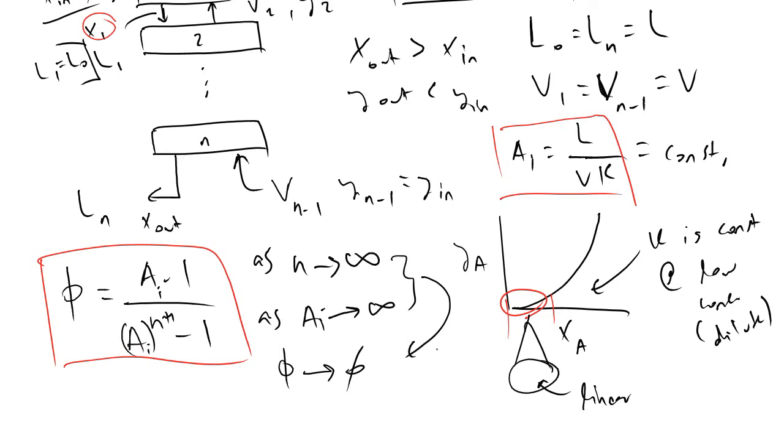And the reason we can let A sub i go to infinity is because in the denominator, A sub i will always be a higher power than the numerator. And so that's the reason why phi will still approach zero.